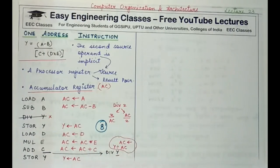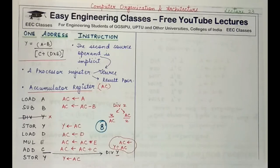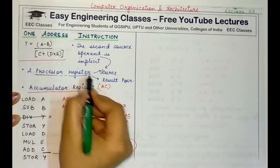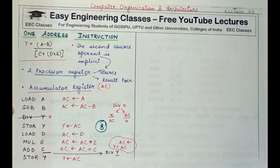In the last case, using three address instructions we used 4 instructions, and 6 instructions in the case of two address instructions. But with one address instructions, we needed almost double the number of three address instructions — this is a disadvantage. More instructions are required, and it is also tricky for a new programmer to write programs remembering which register is implied and how it acts as both source and destination.